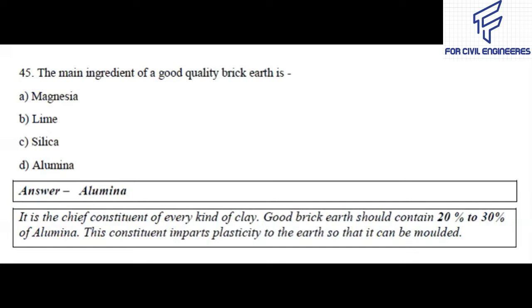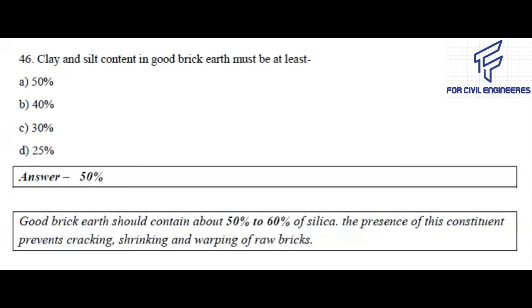Question number 45: The main ingredient of good quality brick earth is — magnesia, lime, silica, or alumina? The right answer is alumina. It is the chief constituent of every kind of clay. Good brick earth should contain 20 to 30 percent of alumina. This constituent imparts plasticity to the earth so that it can be molded.